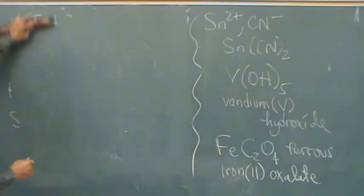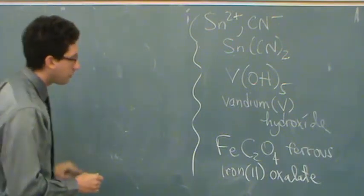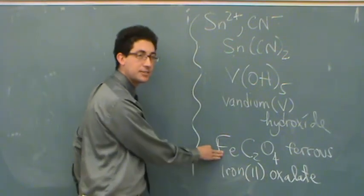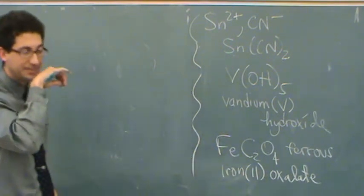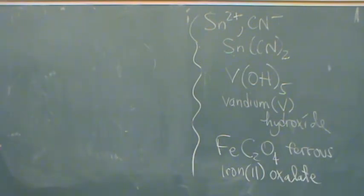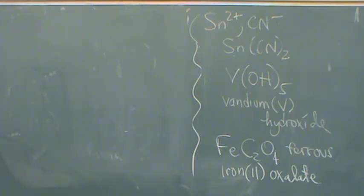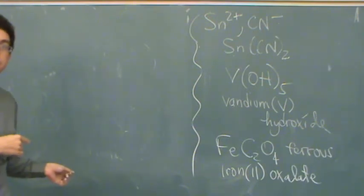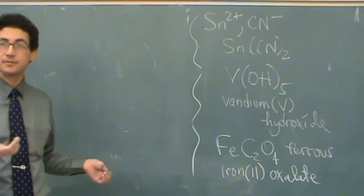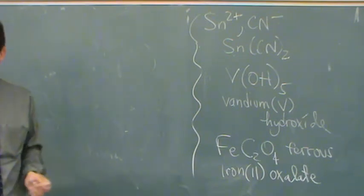Does the Roman numeral always correspond to the charge? Yeah, the Roman numeral is the oxidation state of the metal, definitely. Yeah, that's what we're indicating. So because transition metals can have more than one. How's that feeling on these? You want to do more ionics? Anybody else want to do more ionics? Sure, I'll do a few more.